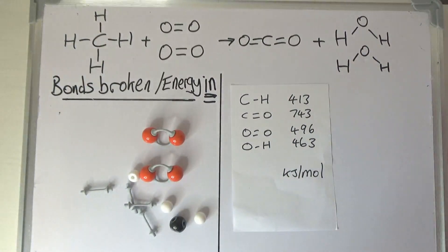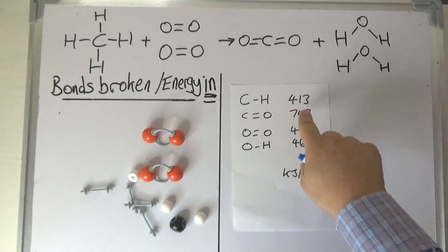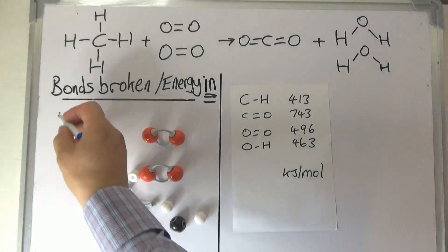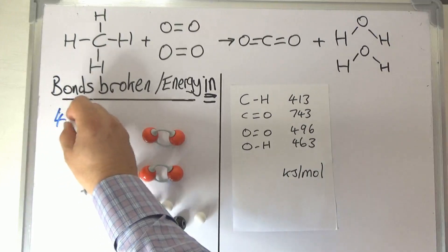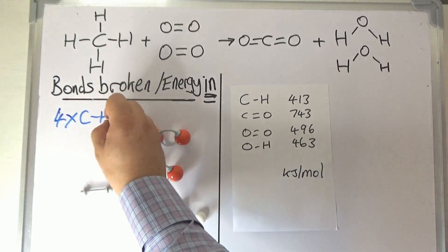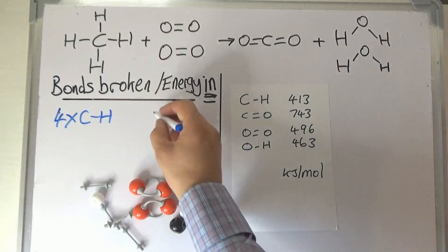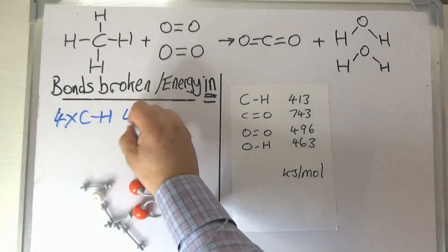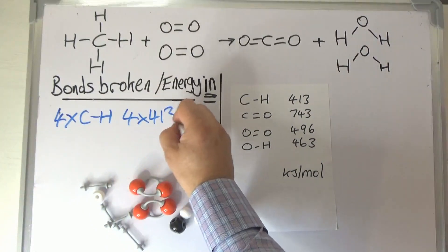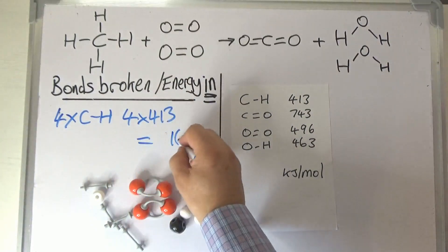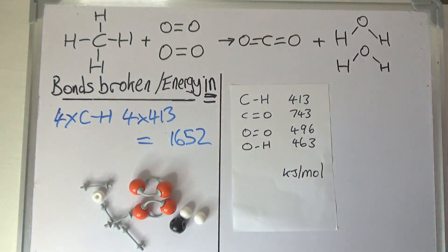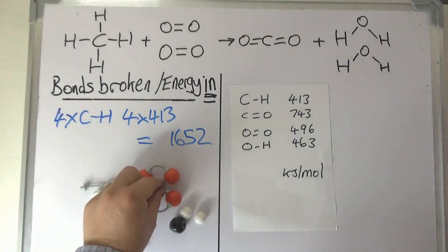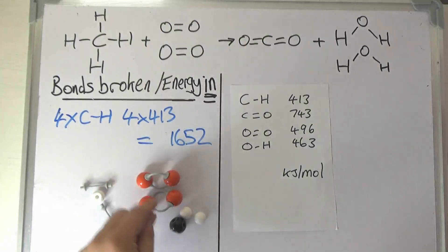You can see we've broken four bonds — here they are — and we can see from the table that each C–H bond takes 413 kilojoules per mole of energy. So to break up that molecule it's going to be four of these bonds that we break, and that's going to take four times 413, which is 1,652 kilojoules per mole of energy.